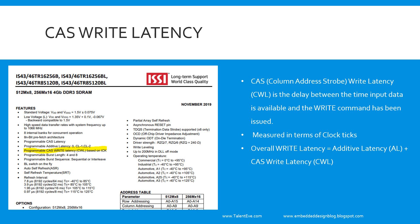The time when the data is available on the data lines of the DDR and the time when a write command is issued — the difference between these two is called the column address strobe write latency. This is also measured in terms of clock ticks.